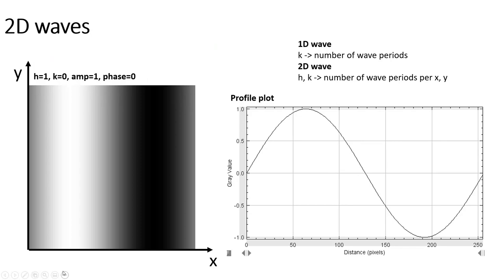Now we move from 1D to 2D spatial waves. Spatial waves can be described in 2D and 3D. For 2D waves, we define not just a single k number but two numbers: the h number and the k number. These are called Miller indices. They tell us how many times the wave oscillates along the x-axis (h) and how many times along the y-axis (k).